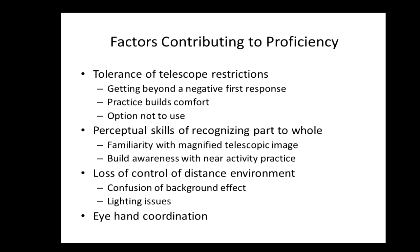There are also factors helpful to discuss with the student that contribute to proficiency. Tolerance of these telescope restrictions — getting beyond that first response of not liking having this thing in front of the eye — improves with practice. The fifth practice session is better than the first. Students also have the option to choose not to use the device, and talking with them about those instances can help them anticipate when it's not helpful to bring out the tool. The perceptual skill of recognizing part to whole — when looking through the telescope, getting just a piece of an image and being able to put it together, such as looking at words across a board — takes time to develop.